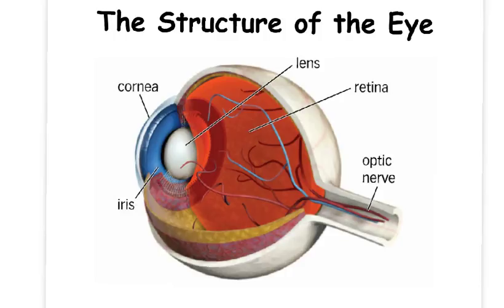There is also a spot on the retina, right in the middle, known as the fovea or yellow spot, where there is the greatest concentration of photoreceptors.